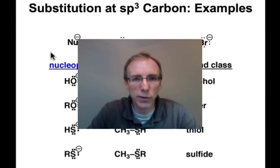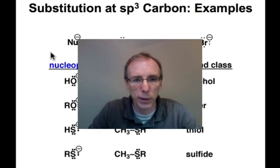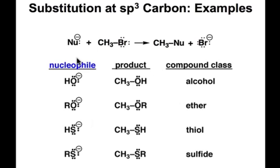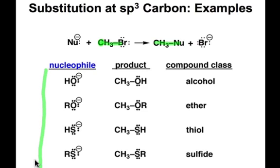Whenever we encounter a reaction for the first time, I always think it's helpful to see some actual bonds and atoms, some real chemical transformations of the particular reaction we're studying. In the case of substitution at sp3 carbons, we're looking at substituting the carbon-bromine bond in this methyl sp3 carbon with a carbon-nucleophile bond. As you go through this set of reactions, you should see a common pattern that emerges and begin to build your experience with recognizing different nucleophiles.